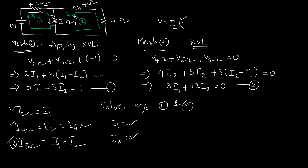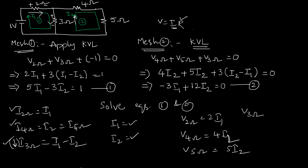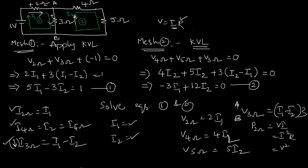Once you have the current values for each element, voltage across 2 ohm is 2I1; voltage across 4 ohm is 4I2; voltage across 5 ohm is 5I2. For the 3 ohm resistor between nodes A and B, it is (I1 − I2) × 3. Once you have voltage and current for every element, you can calculate power dissipation using VI, I²R, or V²/R — every value is known to you.